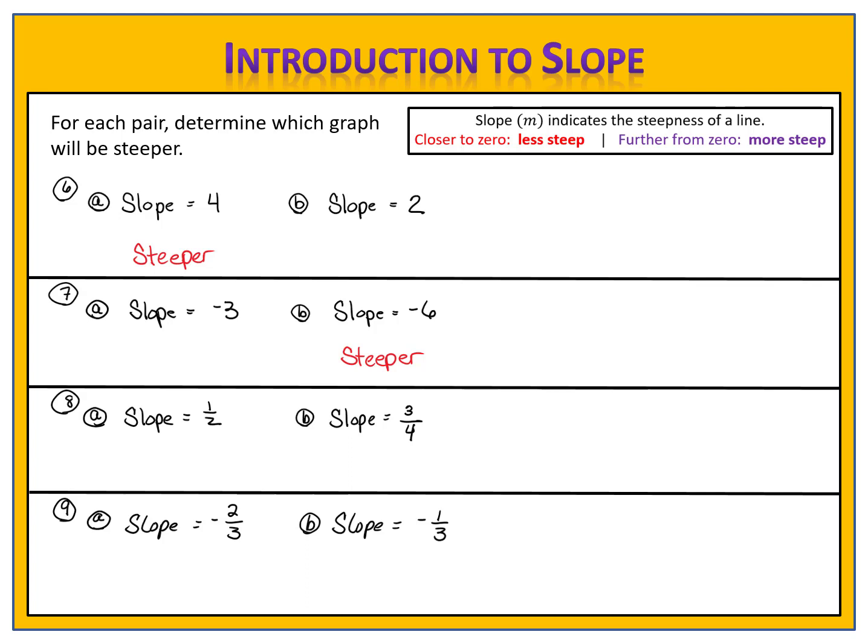In exercise eight, we're comparing the slope of one half with three fourths. One half is really two fourths, so we're comparing two fourths and three fourths. Three fourths is further from zero, therefore that line will be steeper than the line with the slope of one half. In exercise nine, we're comparing the slope of negative two thirds and negative one third. Negative two thirds is further from zero, so the line with slope of negative two thirds will be steeper than the line with slope of negative one third.